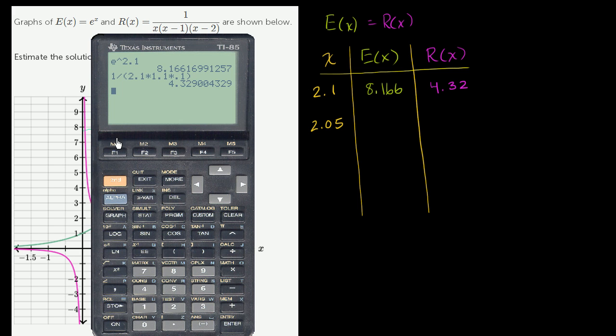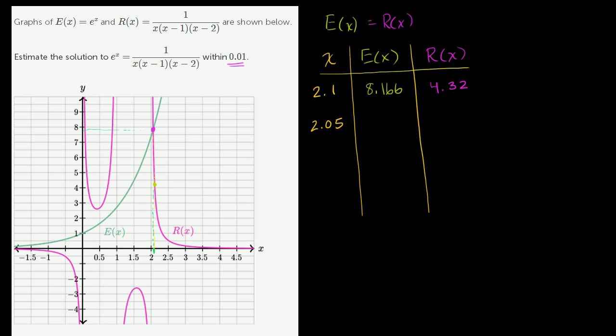So at 2.05, what is e(x)? e(x) is e to the x, right? So e to the 2.05 power gets us 7.768. Approximately 7.768. And what is R(x)? I'll just keep rounding to the thousandths. We didn't even have to round too much because that was so far off.